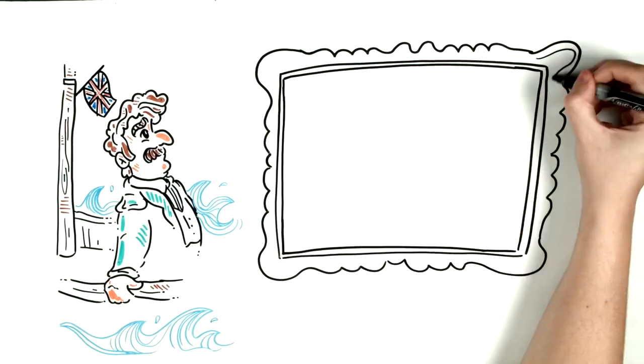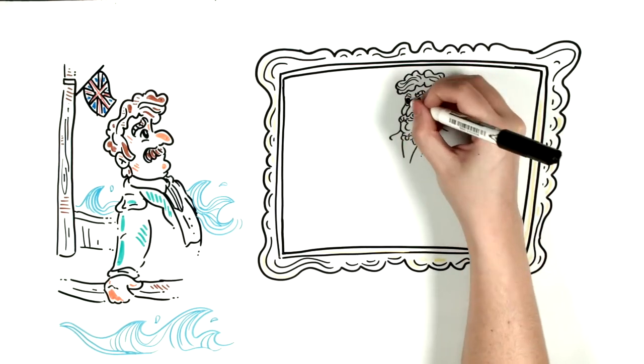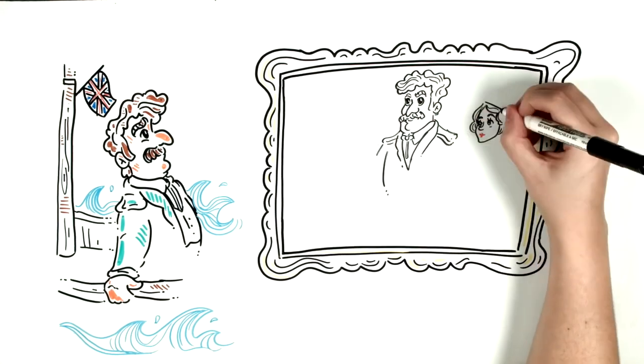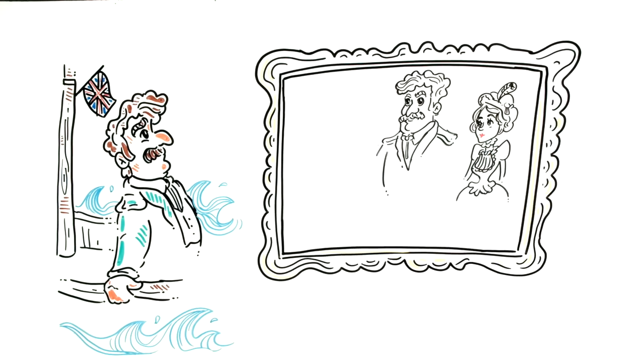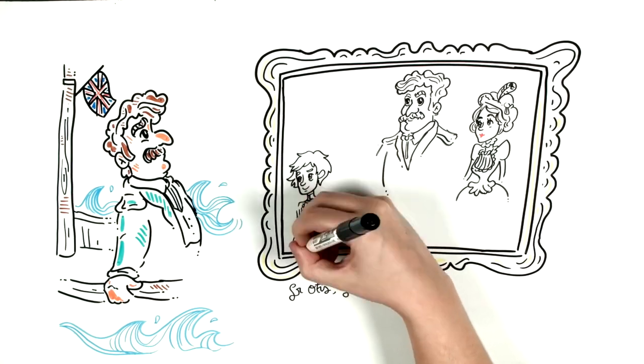The Otis family was made up of six members: Mr. Otis and his wife Lucretia, a beautiful woman with lovely eyes and splendid nature. They also had an English accent by being foreign. The Otis eldest son is Washington, named after President George Washington.